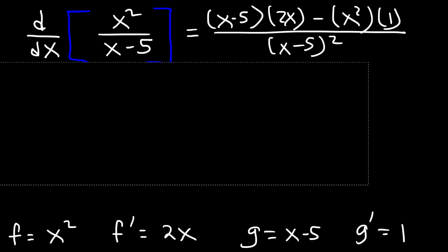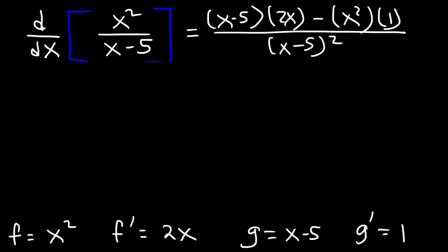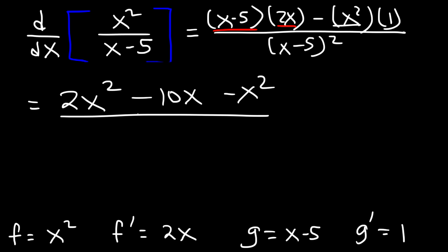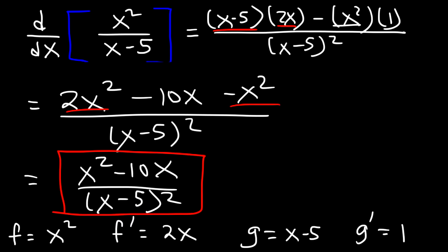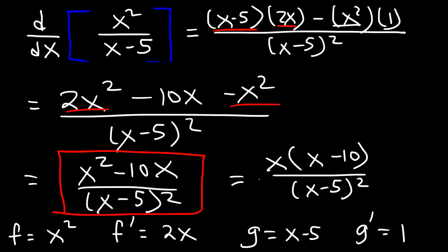Now let's simplify. Distributing 2x to x minus 5: x times 2x is 2x squared, and negative 5 times 2x is negative 10x. Then we have minus x squared. So 2x squared minus x squared is x squared. The final answer is x squared minus 10x, divided by x minus 5 squared. You can also factor out x from the numerator to write it as x times x minus 10, over x minus 5 squared. Both answers are acceptable.